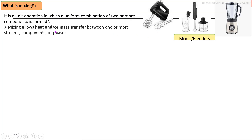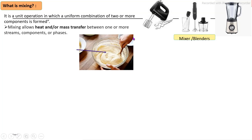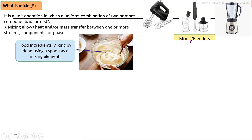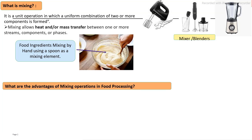During the mixing unit operation, heat and mass transfer are allowed to prepare the final product. The main mixing element is very important, as it processes the ingredients according to their properties. The mixing element is used to prepare a homogeneous mixed product, which is then further processed.